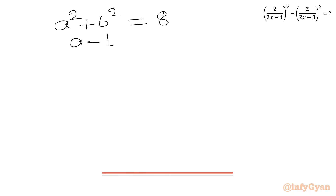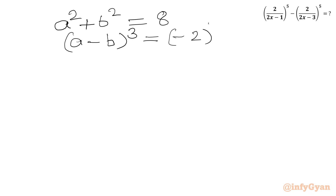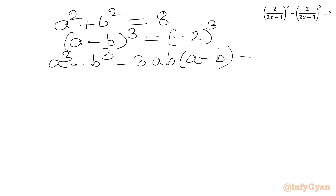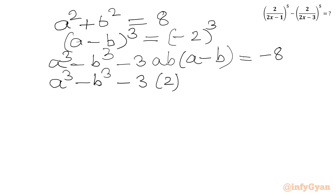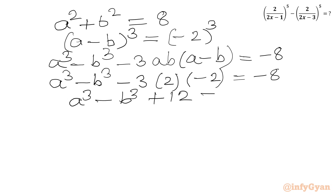Now I will cube both sides: (A - B)³ = (-2)³, giving A³ - B³ - 3AB(A - B) = -8. Since AB = 2 and A - B = -2, we get A³ - B³ + 12 = -8. Subtracting 12 from both sides, A³ - B³ = -8 - 12 = -20.